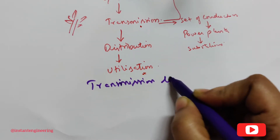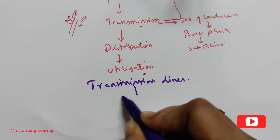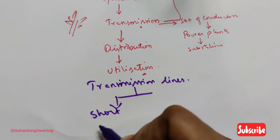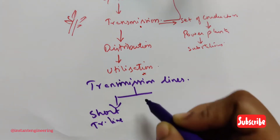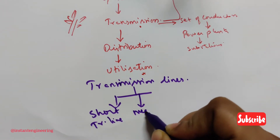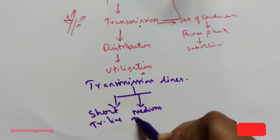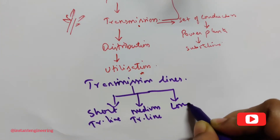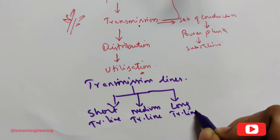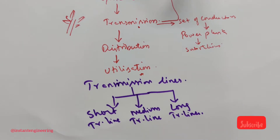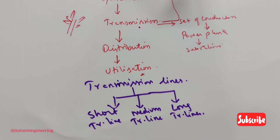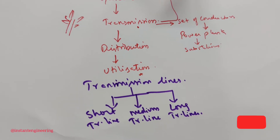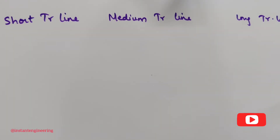Transmission lines are classified into three types: short transmission line, medium transmission line, and long transmission line. Let's see each of them briefly.